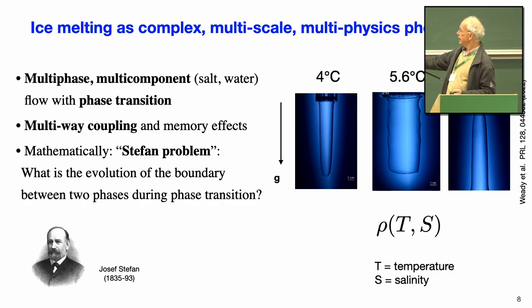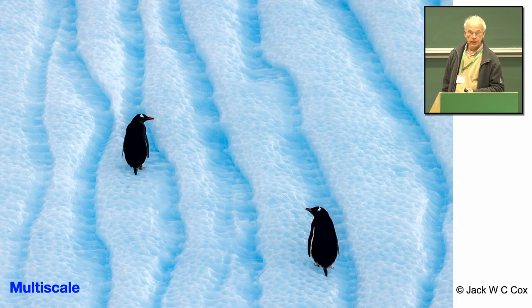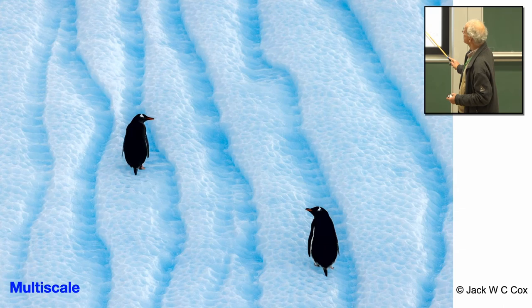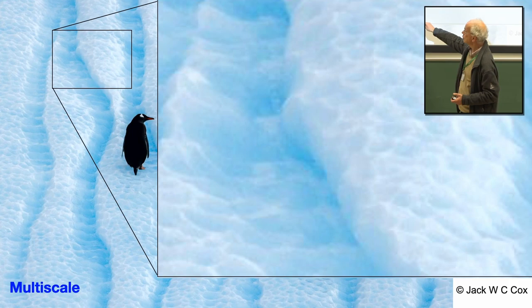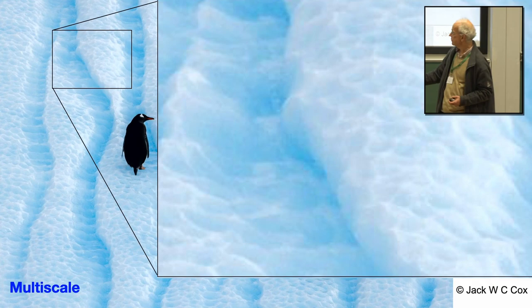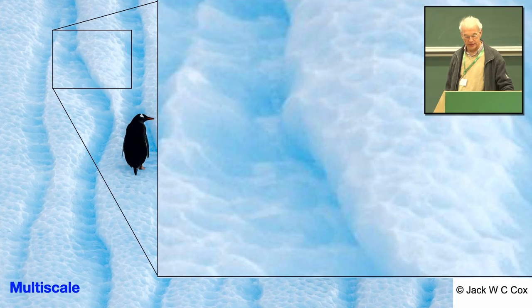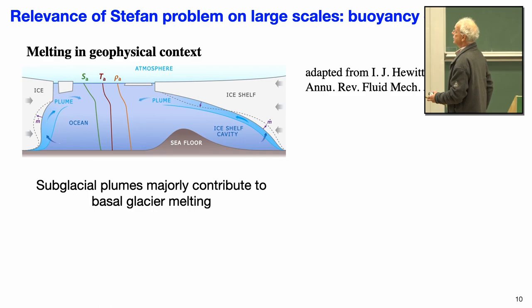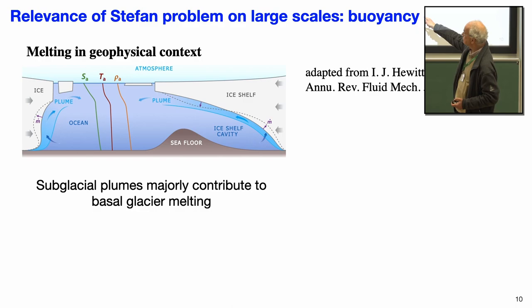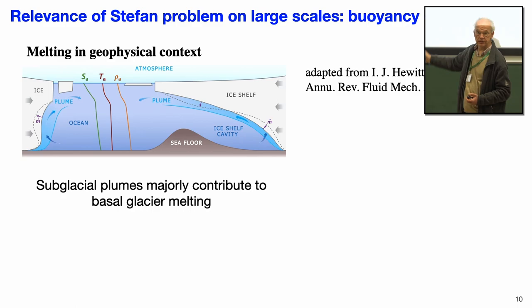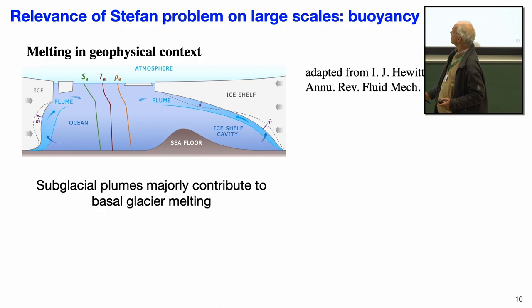This is even in fresh water, and things become much more complicated in salty water. The melting is multi-scale, with smaller scales and larger scales. In a geophysical context, you see subglacial plumes, which majorly contribute to basal glacier melting. The improper treatment of these plumes is the main reason why models are off so much — they rise, interact with the ice, and contribute to melting.